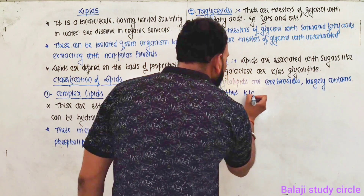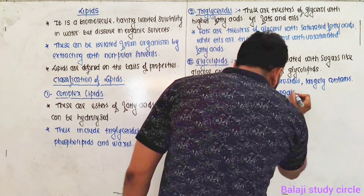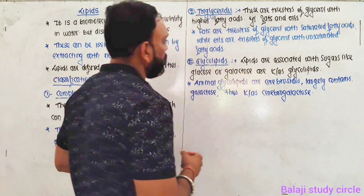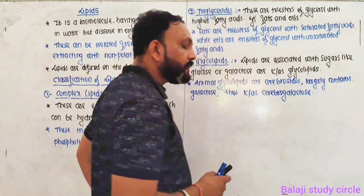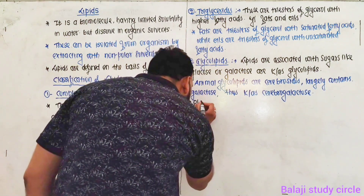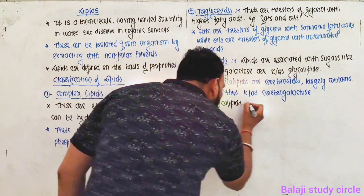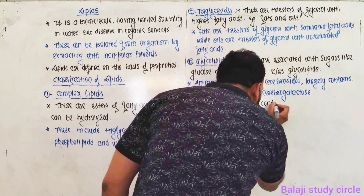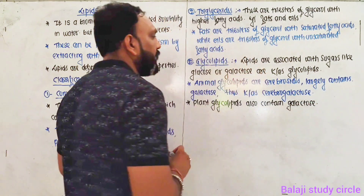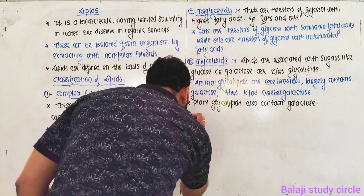Plant glycolipids also contain galactose largely. So for both animal and plant glycolipids, the sugar unit will largely be galactose.